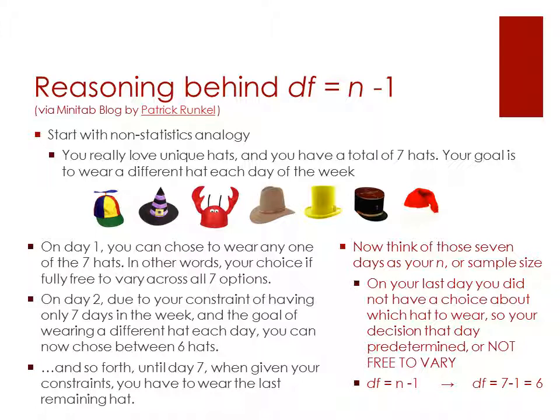So if we were applying this to the degrees of freedom formula, we would say for our degrees of freedom for this particular activity will be seven minus one, or equal to six, because that last day was predetermined for you. Now, this is not an exact numerical match, but it is a good analogy to get the concepts about the freedom to vary.